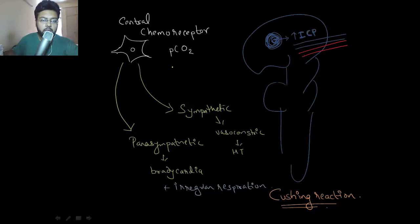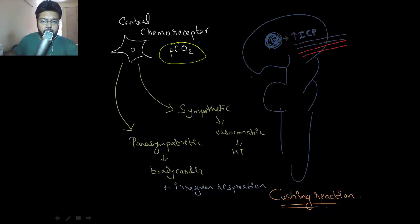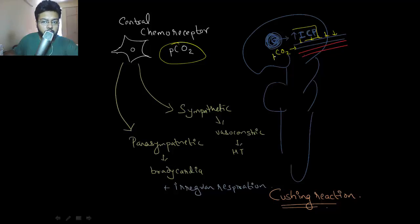Next are the central chemoreceptors. Central chemoreceptors are very sensitive to partial pressure of carbon dioxide. Here is a classical case: a tumor in the central nervous system exerts pressure in the ventricle, creating high intracranial pressure. This high intracranial pressure compresses the veins, so carbon dioxide cannot exit, leading to accumulation of CO₂, which stimulates the central chemoreceptor.